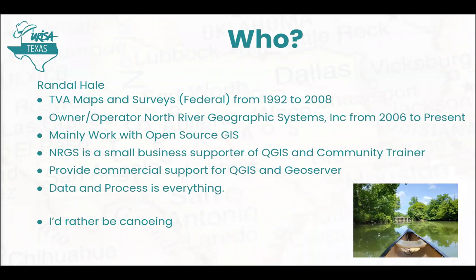I used to work for the feds. I worked for TVA — Tennessee Valley Authority — and their maps and surveys department. If you ever come anywhere in Tennessee, Georgia, Alabama, and pick up an old-school seven-and-a-half-minute topo map, you'll see at the bottom: created by TVA Maps and Surveys. They did a lot of production work. I worked for them for 16 years, then left to do consulting, mainly open source GIS.